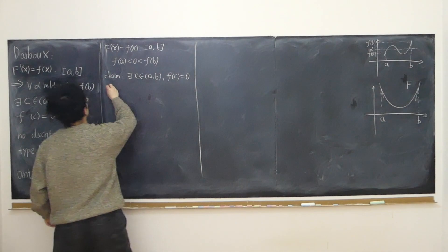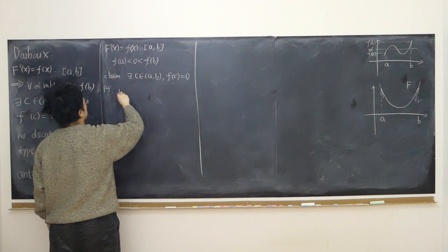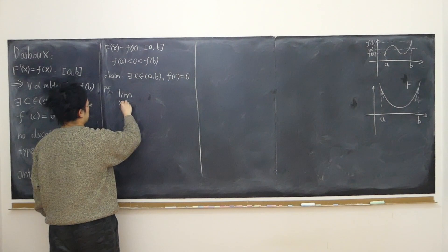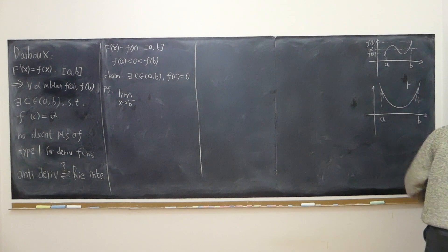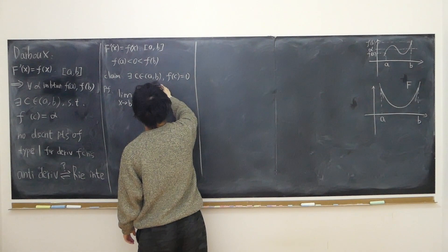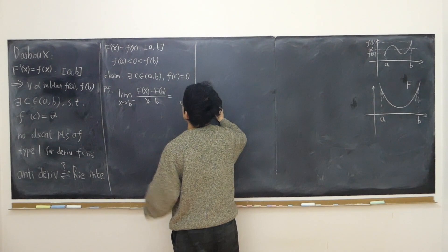The reason is, first of all, the definition of the limit. I'm going to look at point B. As x approaches B from the left-hand side, the limit of [F(x) − F(b)] / (x − b) equals capital F'(b), which is little f(b) in our notation.